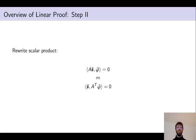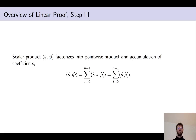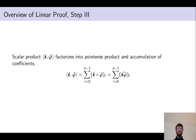In a second step we rewrite the scalar product by pulling the matrix A to the other side, writing it as a scalar product of the secret vector with the transpose of A times phi. We do this because both A and the challenge vector phi are public, so it makes sense to group the public things on one side and the secret things on the other. From now on I write this simply as a scalar product of S with some vector phi.